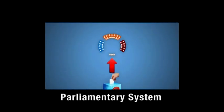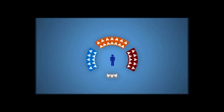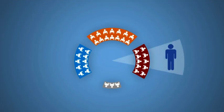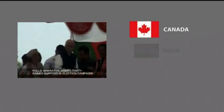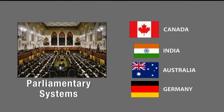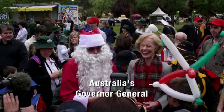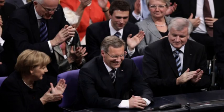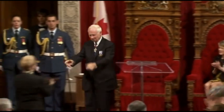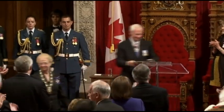In parliamentary systems, the head of government is normally a member of parliament and derives power from parliament. Canada, India, Australia, and Germany have parliamentary systems. In parliamentary systems, there is also a head of state who has a ceremonial and limited constitutional role, while the head of government has the real executive power. Germany's head of state, distinct from the leader of the government, is called president. For Australia and Canada, the head of state is the British monarch, represented by a governor-general.